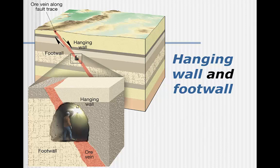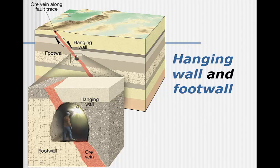Before we put more specific names on the types of faults, we need to orient ourselves. In cutaway views of underground, it is useful to draw a mineshaft along the fault. One side of the fault will be hanging above your head as you stand in that mineshaft — that's the hanging wall. The other side will be under your feet — that's the foot wall.